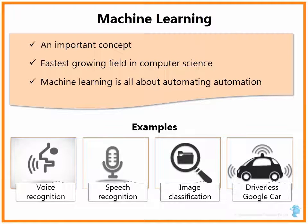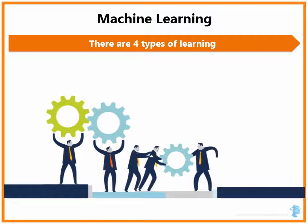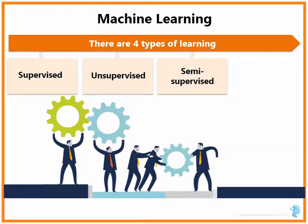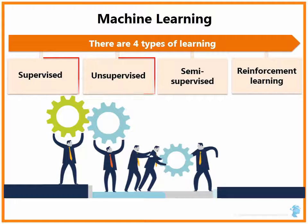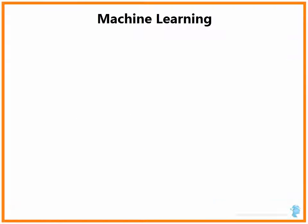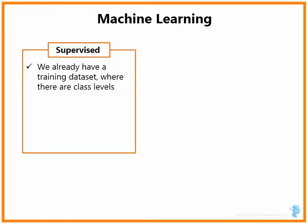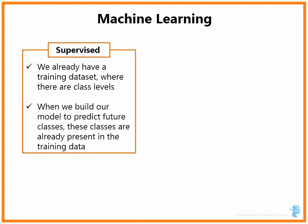Those are all examples where Machine Learning has been applied with huge success. There are four types of learning: supervised, unsupervised, semi-supervised, and reinforcement learning. However, supervised and unsupervised techniques are the major areas of Machine Learning. For supervised learning, we already have a training dataset where class labels like Hired versus Non-Hired, Fraud versus Non-Fraud, or Spam versus Non-Spam are present. When we build a model to predict future classes and we know what these classes are in our training data, this is known as supervised learning.